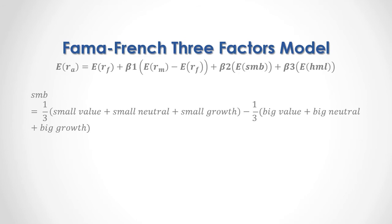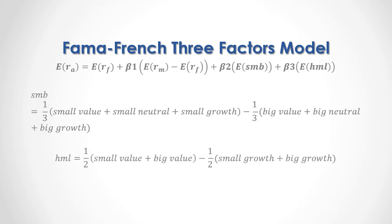The small minus big portfolio is equal to one-third multiplied by small value plus small neutral plus small growth portfolios, minus one-third multiplied by big value plus big neutral plus big growth portfolios, minus one-half multiplied by small growth plus big growth portfolios.